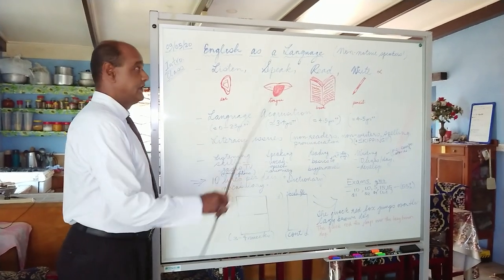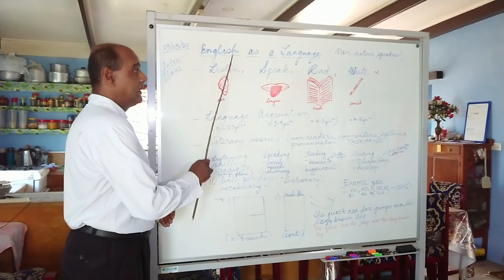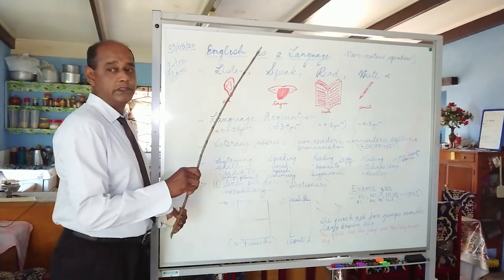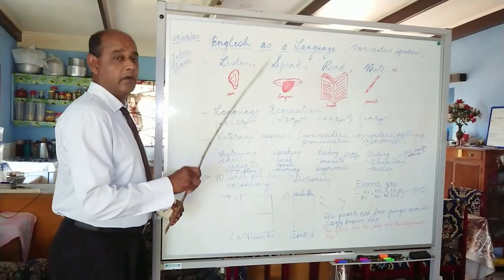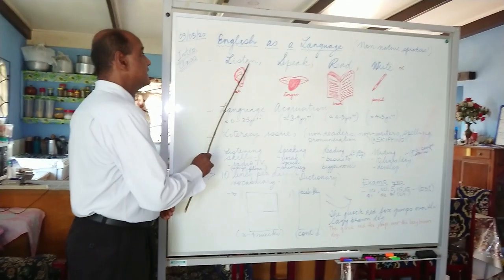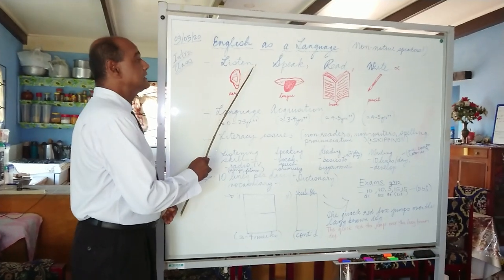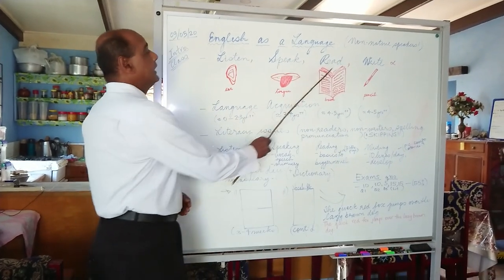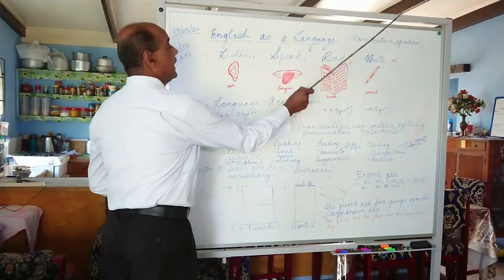The very structure of English education in our schools is structured in such a way that we like to think of English as a subject — in terms of the periods, class organization, exercises, and even how we are taught. English is not just a subject; it's a language. For any language, the four basic skills are listen, speak, read, and write.